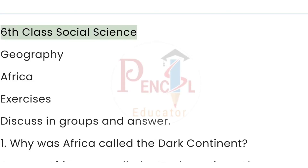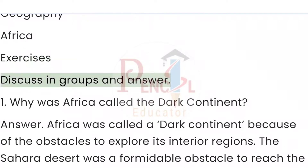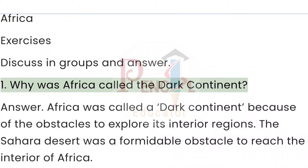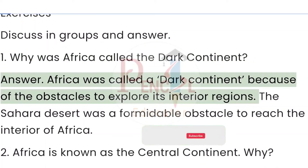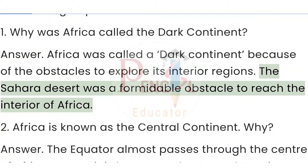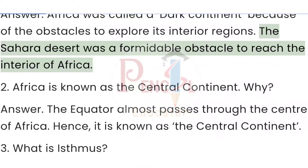6th class social science geography: Africa exercises. Question 1: Why was Africa called the dark continent? Answer: Africa was called the dark continent because of the obstacles to exploring its interior regions. The Sahara Desert was a formidable obstacle to reach the interior of Africa.